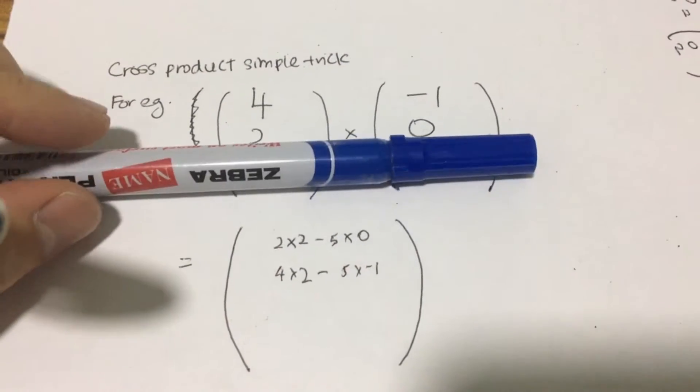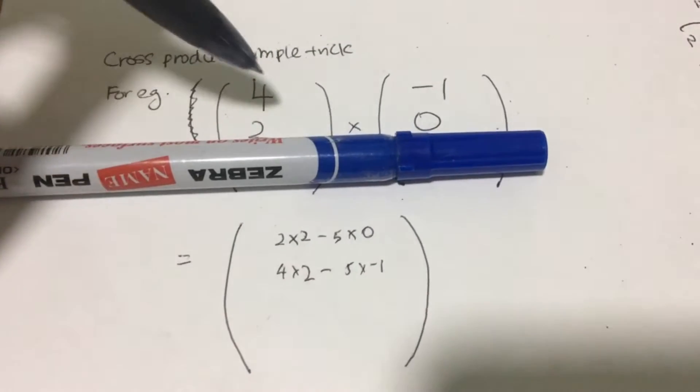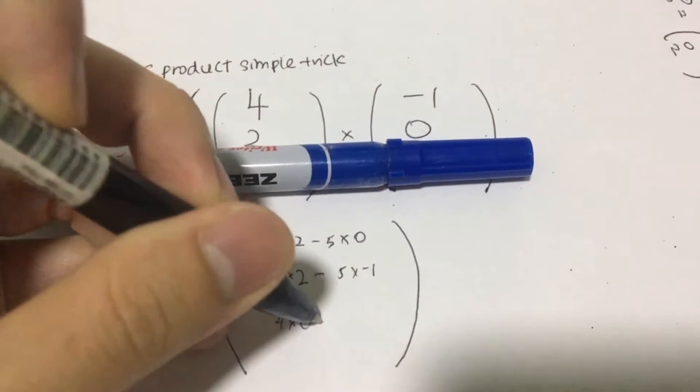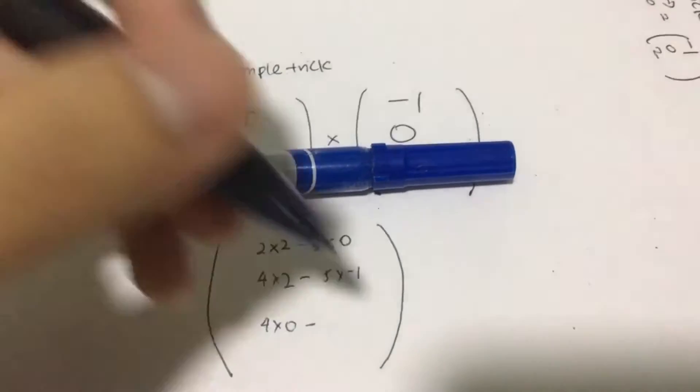And last but not least, I will cover the third row and then I will do a cross multiply. So that will be 4 times 0 minus 2 times negative 1.